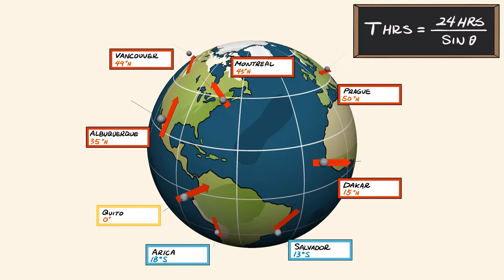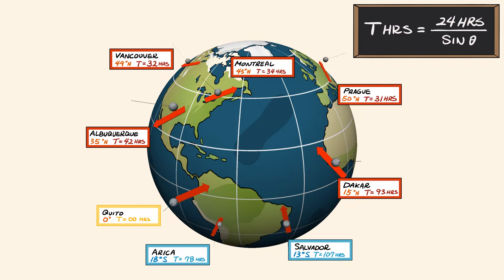But as it turns out, every single pendulum around the world rotates exactly as Foucault predicted they would if earth were a round rotating globe. And that's how we know earth is a spinning sphere rather than a flat disc.